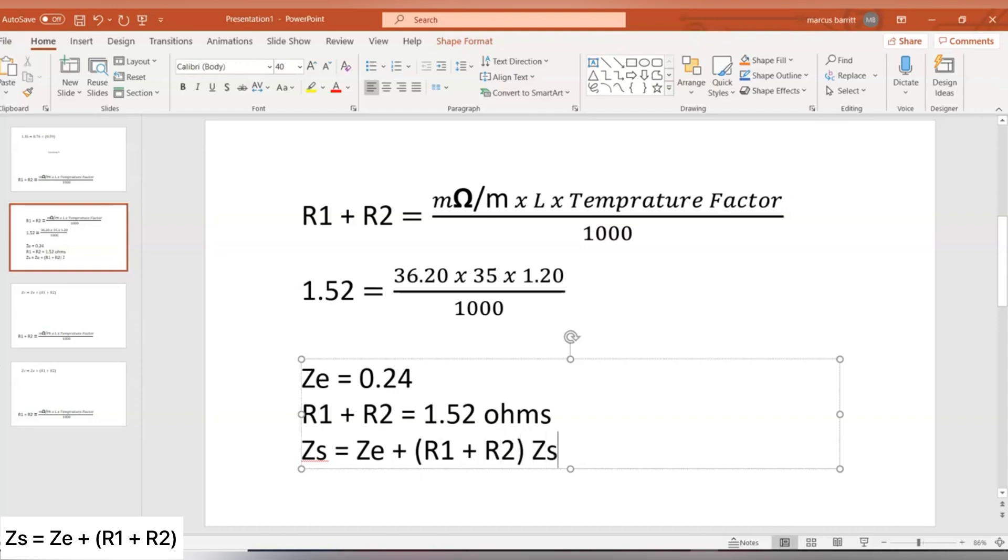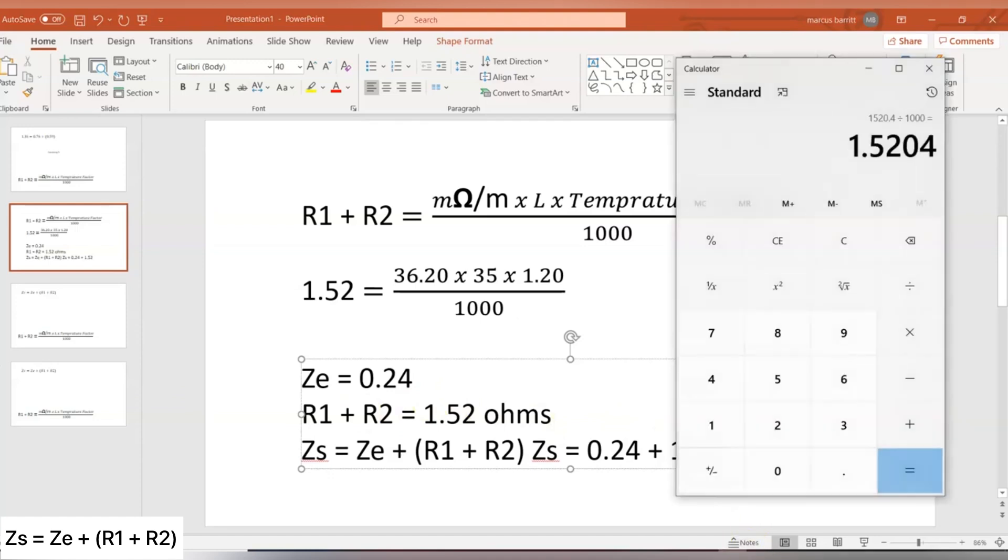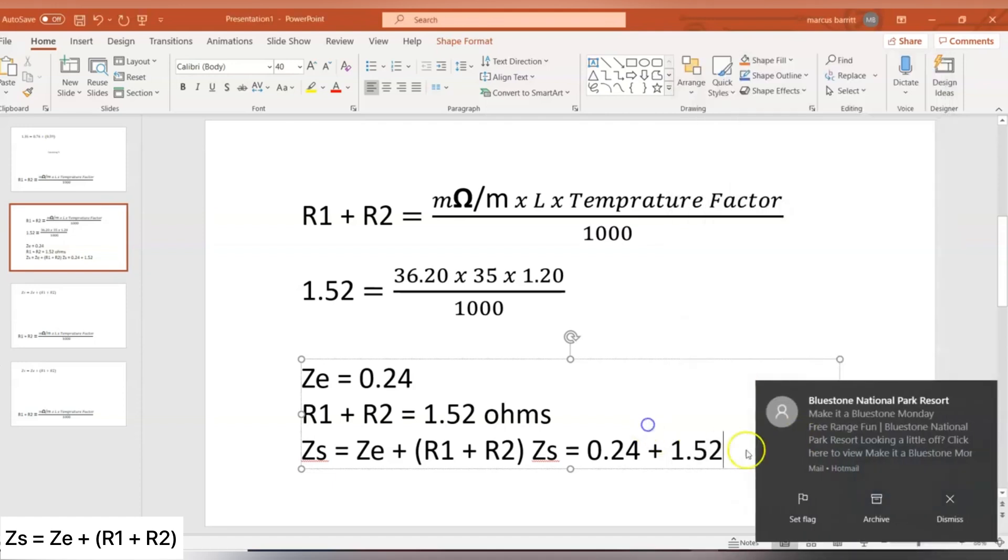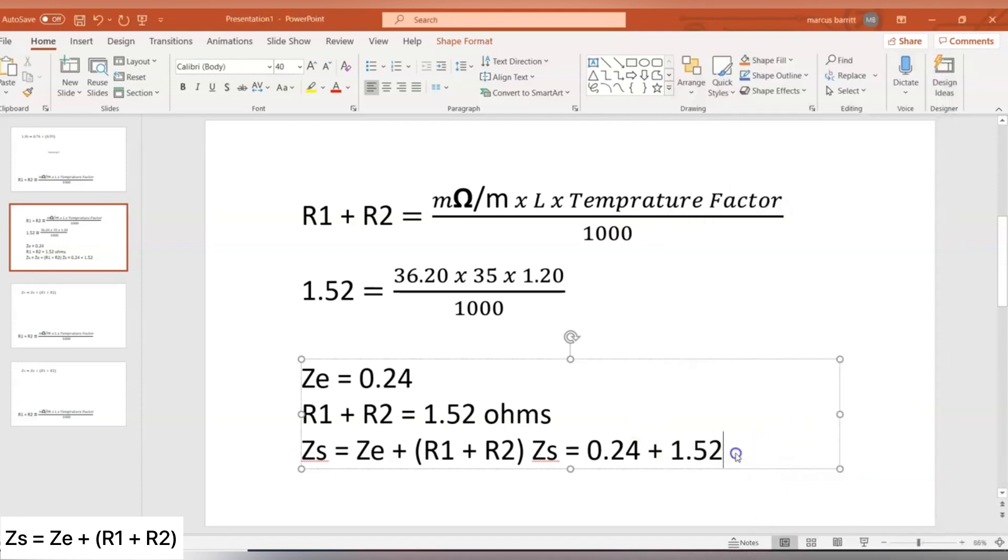So, ZS equals 0.24, add R1 plus R2, which we've calculated to be 1.52 ohms, and that would give us a ZS if we went to our calculator, and we did 0.24, we add that to 1.52, that would give us a value of 1.76 ohms, ZS would be 1.76 for that particular circuit.